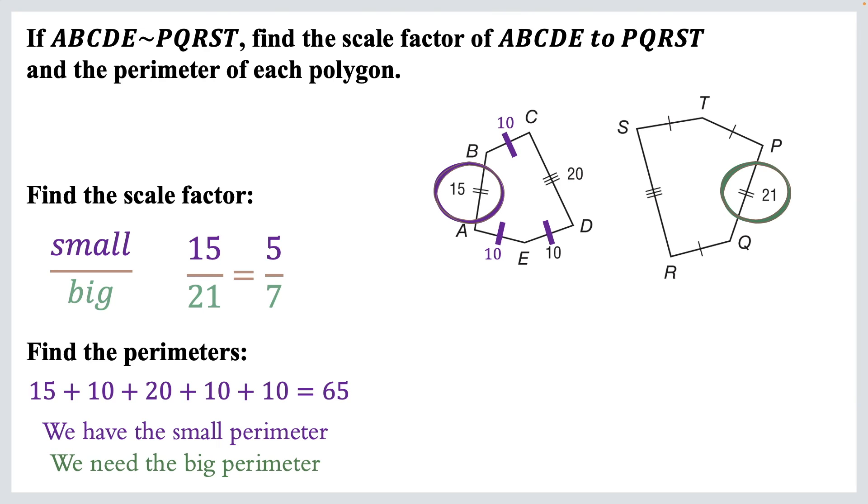We also need the big perimeter. This is where the proportions come in handy. So we take our scale factor, 5 over 7, and set up a proportion. Small over big. 5 over 7 equals 65, that's our small perimeter, over X. That's the big perimeter we're looking for. Cross multiply. 455 equals 5X, divide both sides by 5, and X equals 91. That's the big perimeter.